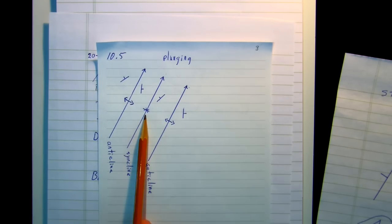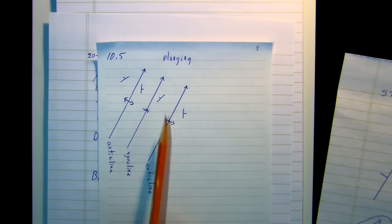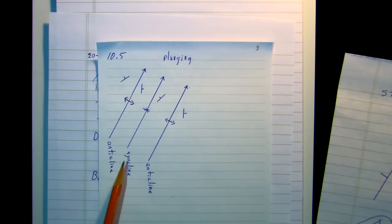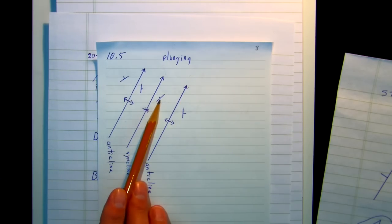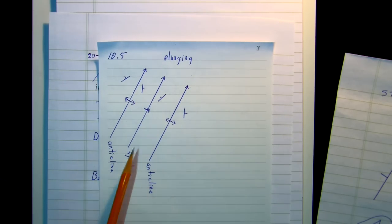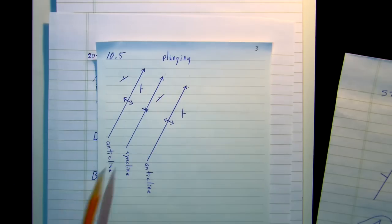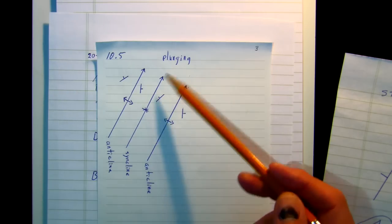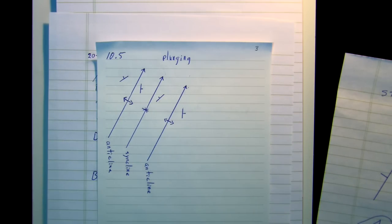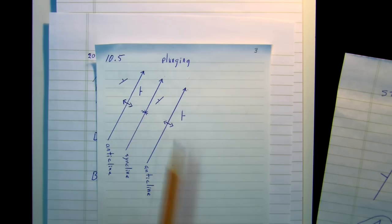And here's a plunging syncline. They're not parallel. Note the strikes are not parallel. This tells us there must be plunging folds here. So we would have to draw this in to our maps. These symbols are for plunging anticlines, plunging synclines.